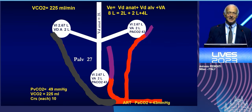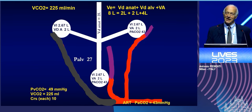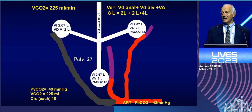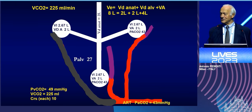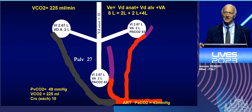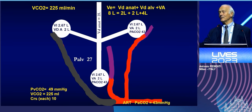Most importantly, ventilation in the alveoli had to be increased to remove the same amount of CO2 because we waste two liters — so ventilation has moved from 6 to 8. If we maintain the same respiratory rate, the alveolar pressure has increased one third, and the driving pressure has been increased 30%, let's say from 20 to 27.